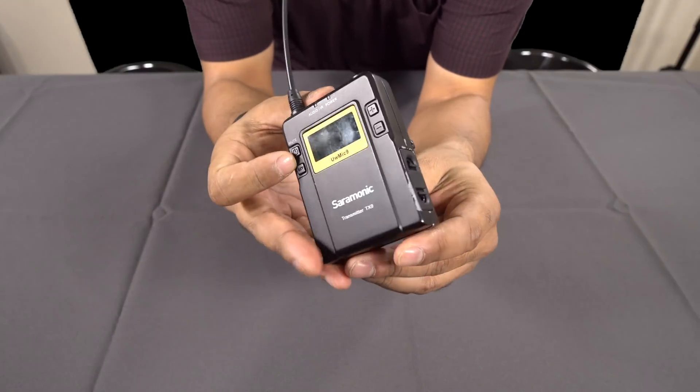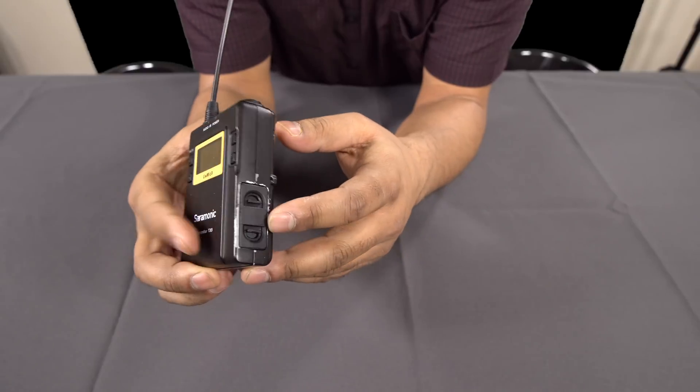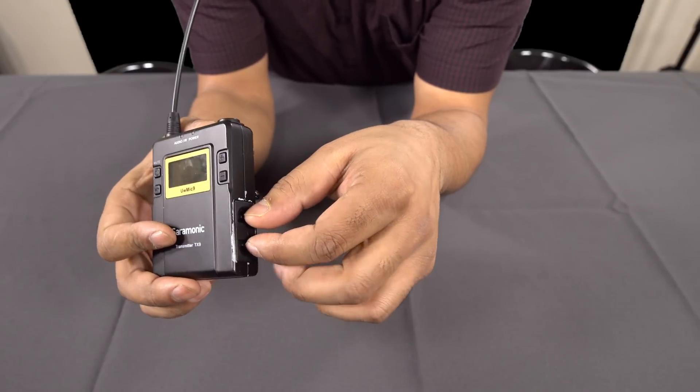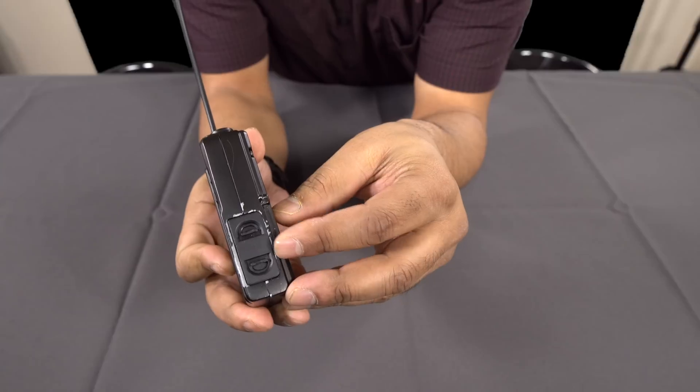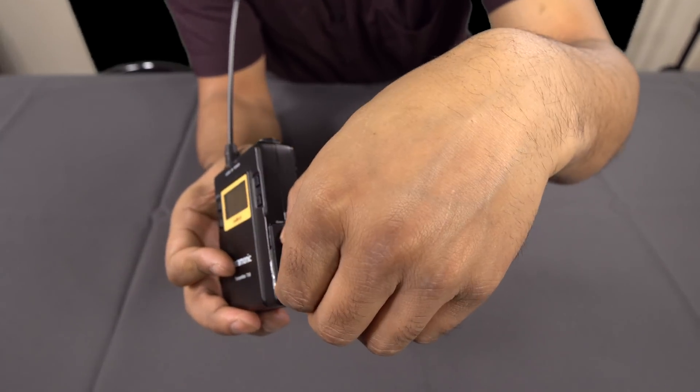What tends to happen is, the issue that we have is if you look here, or those of you who own these, you'll know very well, to get the battery out what you do is there's two clips here, you push them in and the battery just comes out.